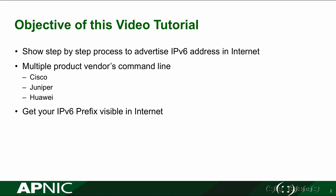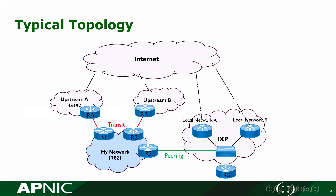Let's see the typical topology before we start the configuration. This diagram is for the network that we are configuring to advertise the IPv6 prefix, which is my network running as AS number 17821. This is the APNIC training AS number that's running in the training lab.